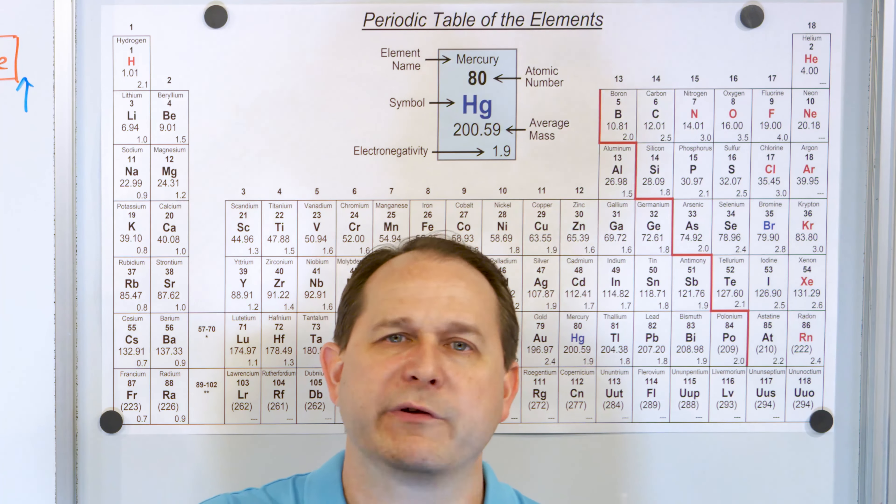Bromine — symbol Br, atomic number 35, so 35 protons and 35 electrons — is a non-metal on the right-hand side. It would like to gain one electron to have the electron configuration of krypton, which is right next door. And finally arsenic — which you don't want to eat — is a metalloid near the stair-step line.